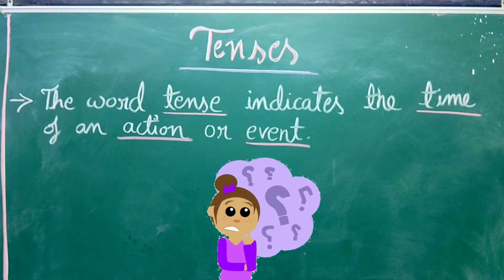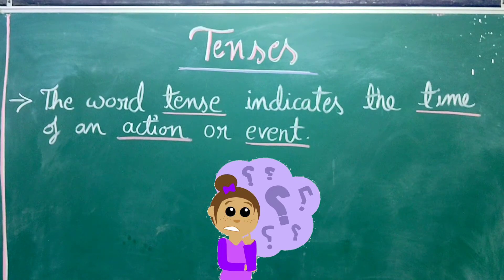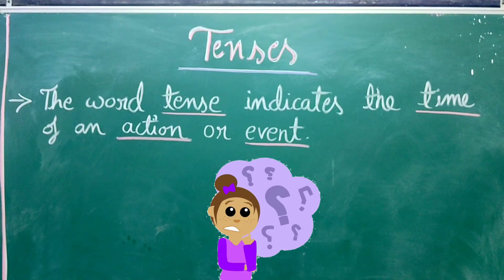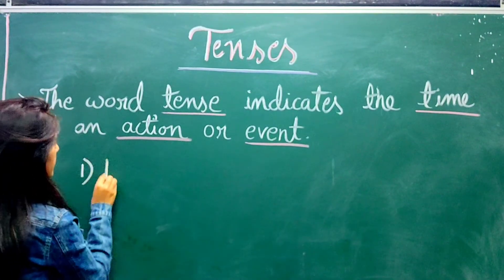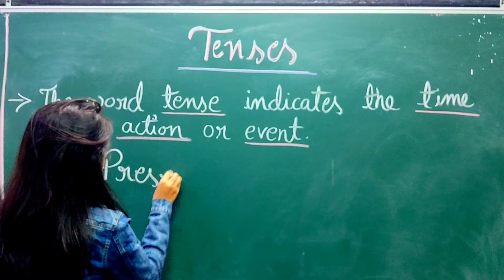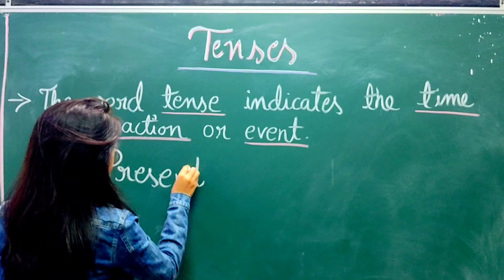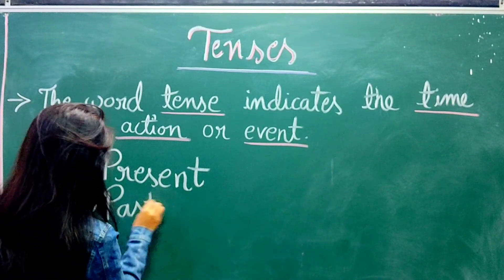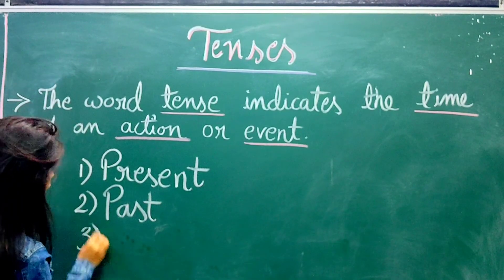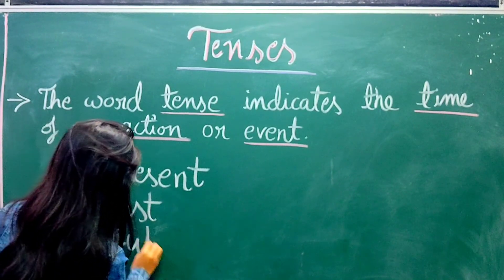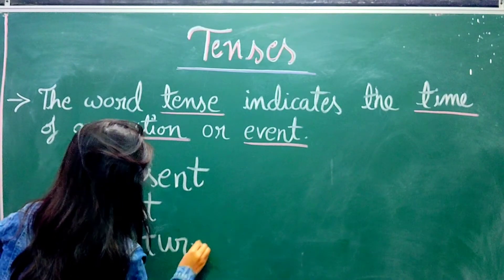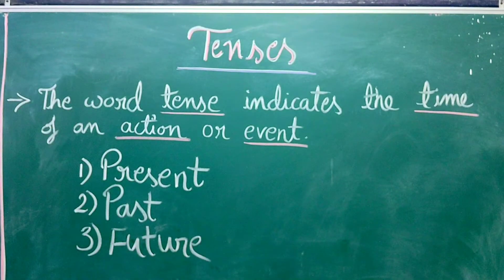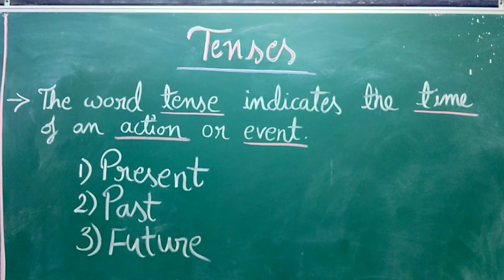So now the question is what time? What time are we talking about? This time can be divided into three parts. That is present, past, future. So these three are tenses. Present tense, past tense and future tense.